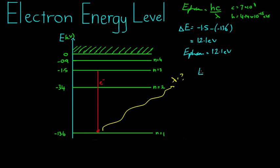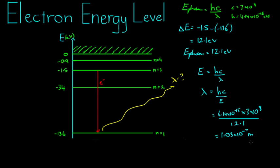Lambda equals Planck's constant times speed of light over energy, which equals 4.14 times 10 to the negative 15 times 3 times 10 to the 8th divided by 12.1. Calculating that gives 1.03 times 10 to the negative 7 meters.